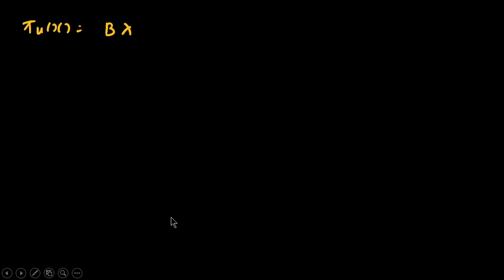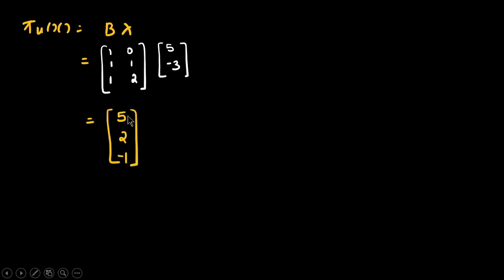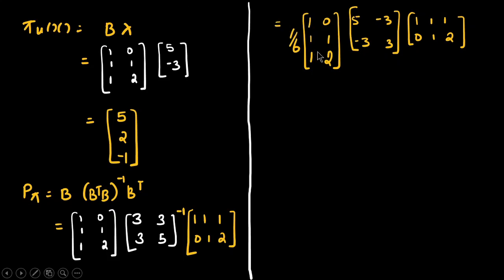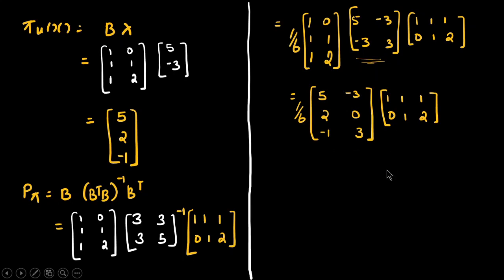Now we calculate pi_U(x). pi_U(x) = Bλ, where B = [[1,0],[1,1],[1,2]] and λ = [5,-3]. The multiplication gives pi_U(x) = [5, 2, -1]. For the projection matrix, the equation is P_π = B(B^T B)^{-1} B^T. Substituting (B^T B)^{-1} and multiplying out, we obtain the full 3×3 projection matrix.